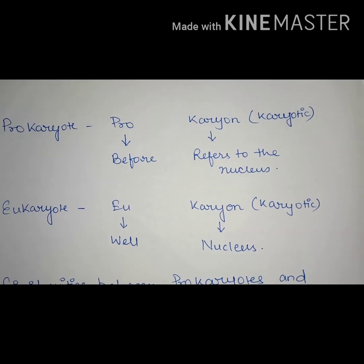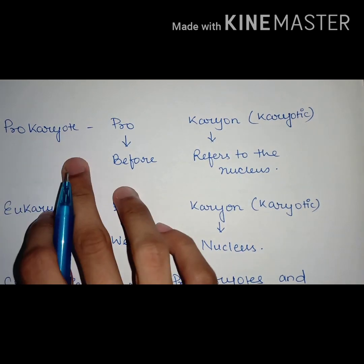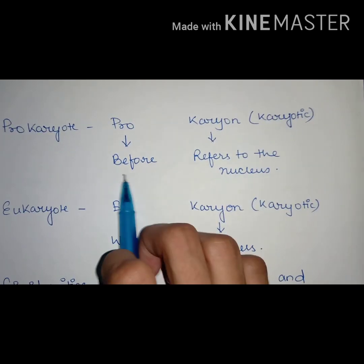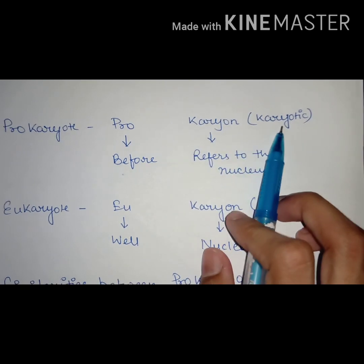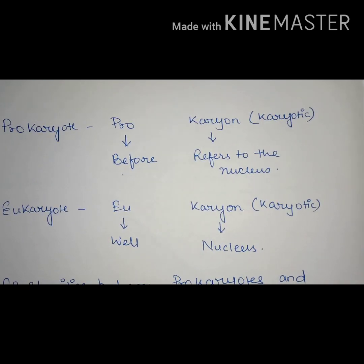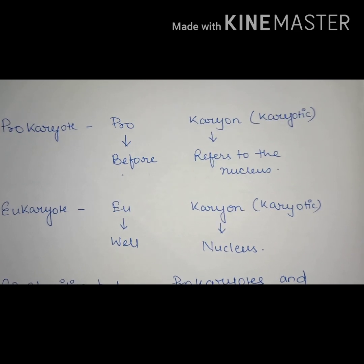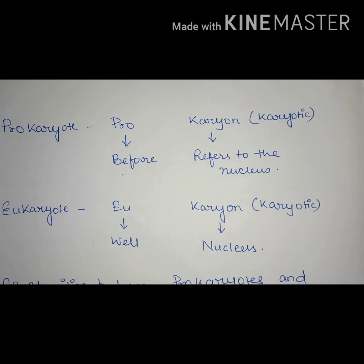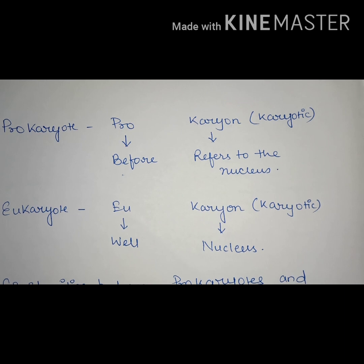Let's begin with what is a prokaryote? The word prokaryote means: 'pro' means before, and 'karyon' or 'karyotic' refers to the nucleus. And what is eukaryote? 'Eu' means well, and 'karyot' again refers to the nucleus. Generally, prokaryote means that doesn't have a well-defined nucleus, and eukaryotes mean that have a well-defined nucleus.